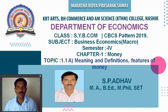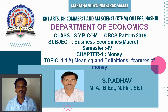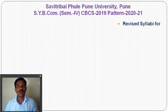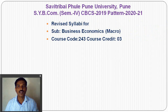Hello friend, welcome to this online lecture series for SYBCOM CVCS pattern 2019, and welcome to semester number 4. The previous semester number 3, we learned macroeconomics 4th chapter, and this semester we also learn the 4th chapter. So let us begin with the 1st chapter, which is named money. Before starting the 1st chapter, let us know our paper pattern and course code. The course code is 243 and course credit is 03, similar to the previous semester.